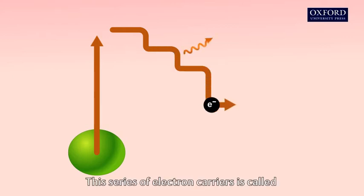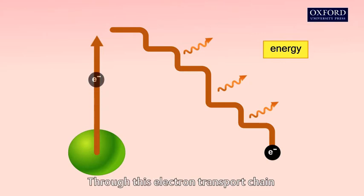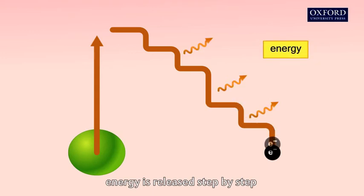This series of electron carriers is called the electron transport chain. Through this electron transport chain, energy is released step by step.